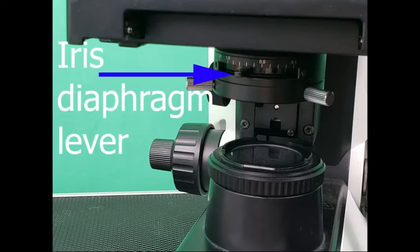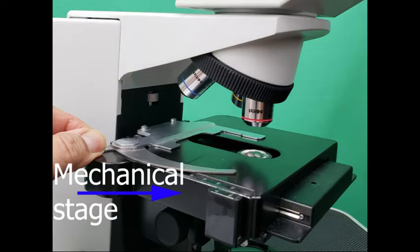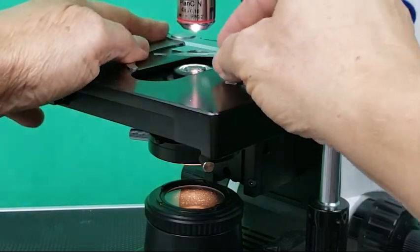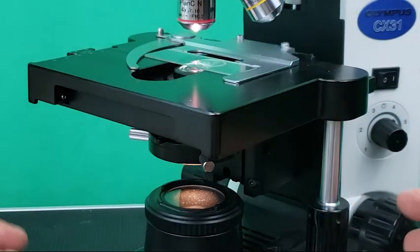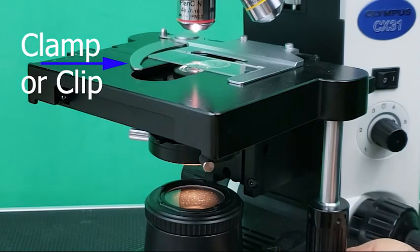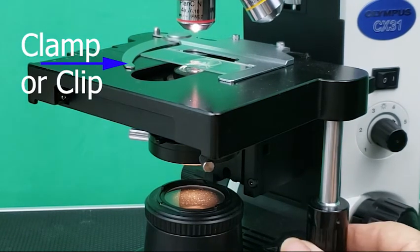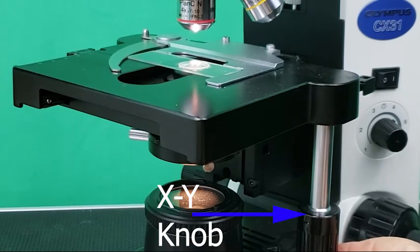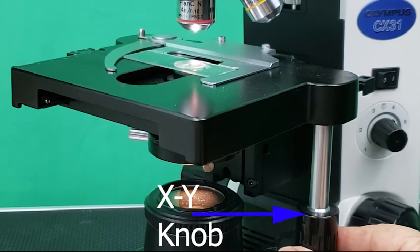The stage, sometimes called the mechanical stage, is a flat platform beneath the objective lens upon which the slide is placed. The stage has either a mechanical stage clamp or clip, both of which keep the slide stationary during viewing. The mechanical stage adjuster knobs allow the precise movement of the slide on the stage.